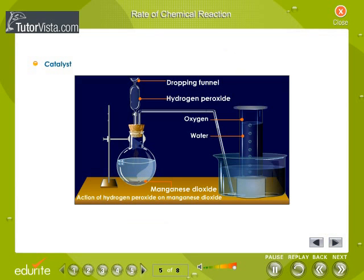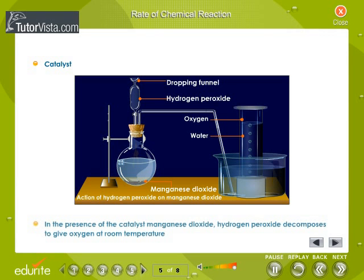Similarly, a catalyst hastens the reaction without itself taking part in the reaction. In the presence of catalyst manganese dioxide, hydrogen peroxide decomposes to give oxygen at room temperature.